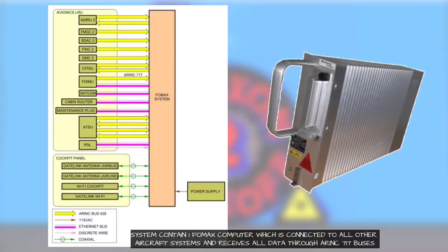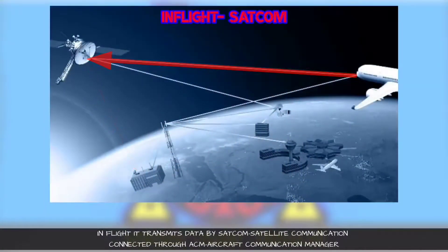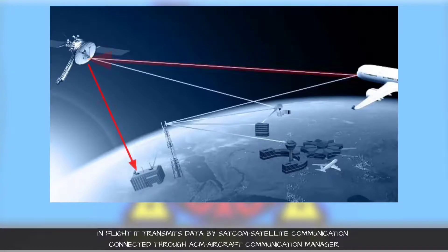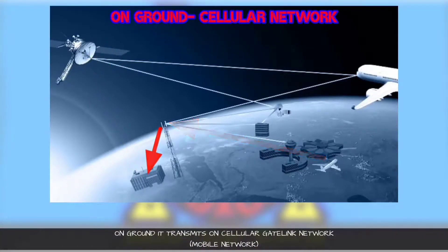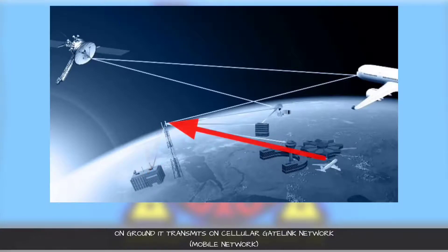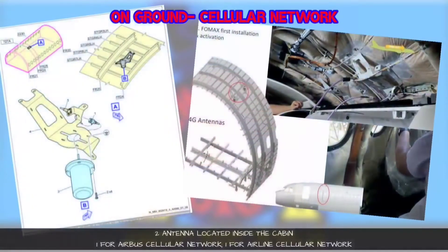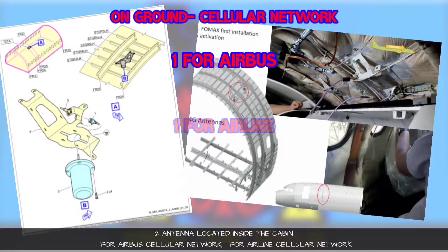The system contains one FORMAX LRU computer which is connected to all other aircraft systems and receives data through ARINC 717 buses. In flight, it transmits the data via satellite communication and is connected to the aircraft communication manager. When the aircraft is on the ground, it transmits the data by cellular gate link network. For transmission, there are two antennas located inside the cabin.